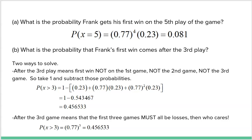Part A is straightforward using our formula. The probability the first win is on the fifth play means four straight failures followed by a success: (0.77)⁴ × 0.23 ≈ 0.081. There's about an 8% chance that Frank has to wait until the fifth play of the game to get his first success.